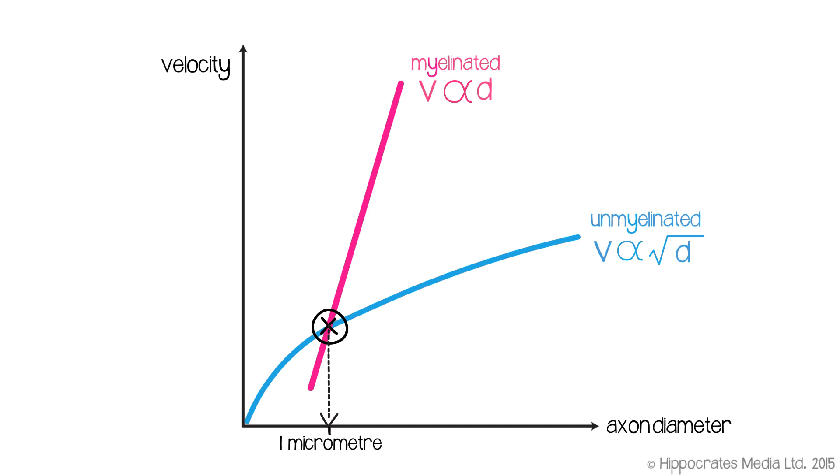What this means is that if your nerve fiber is wider than 1 micrometer, if the axon is wider than 1 micrometer in diameter, then it pays to be myelinated. You're going to be a much faster conducting fiber if you're a myelinated fiber. Whereas if you're a very narrow nerve fiber, a very small one, you're actually going to be slightly faster conducting if you're unmyelinated. And this explains why the very smallest fibers in the body tend to be unmyelinated fibers, and the big fat ones, the fastest conducting, are myelinated.